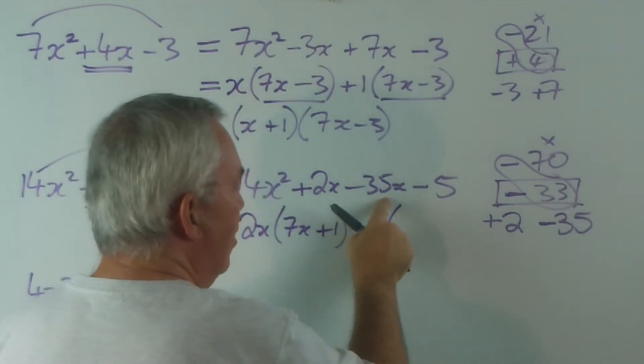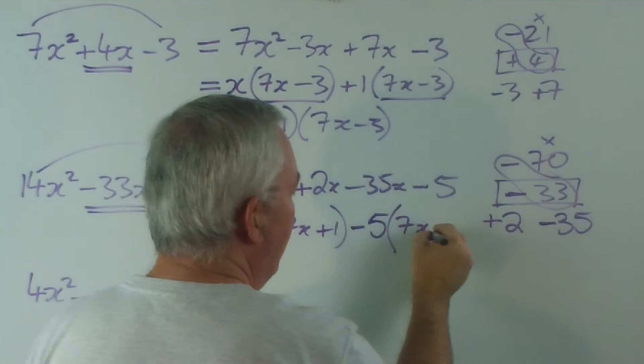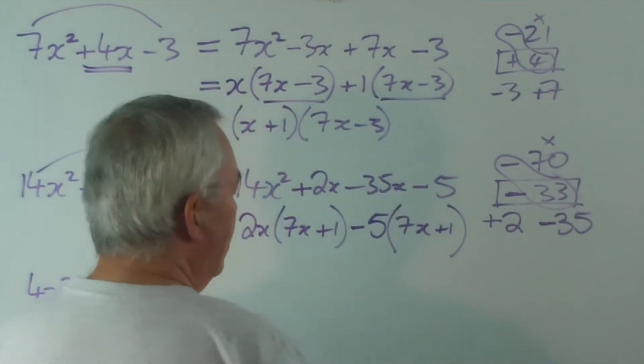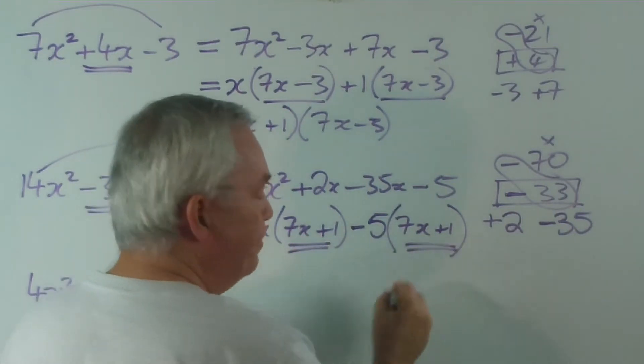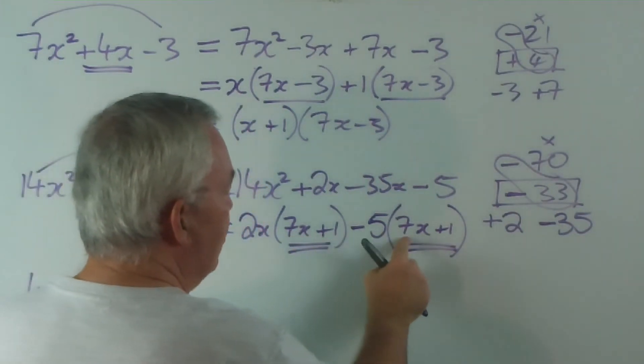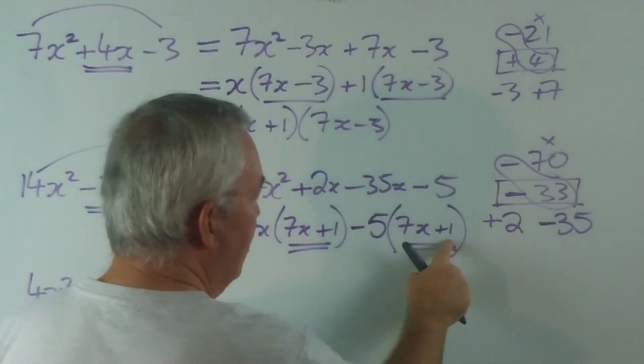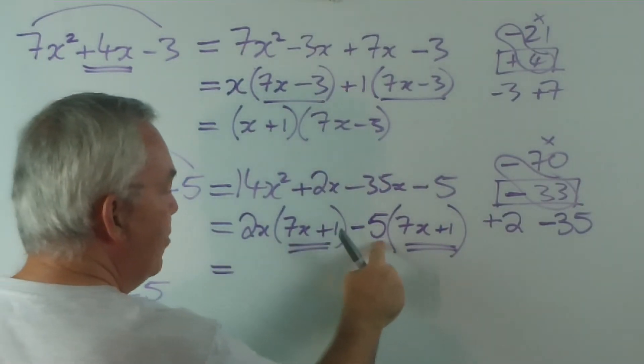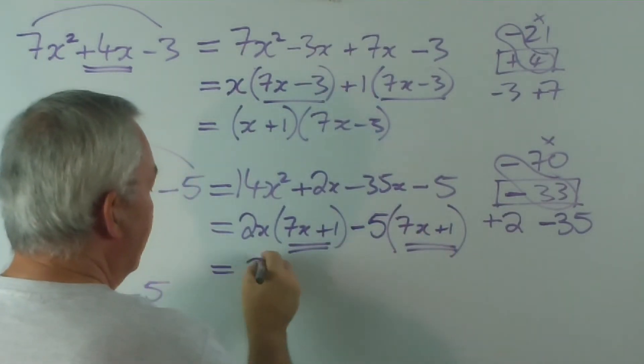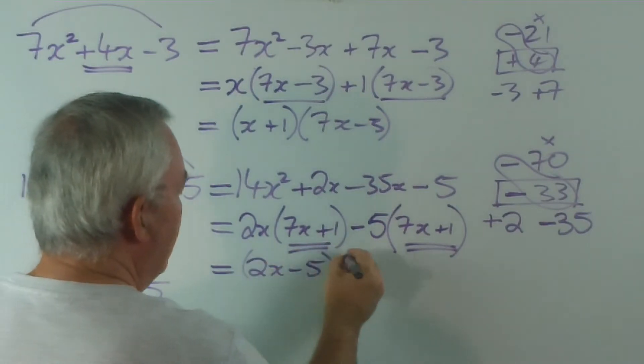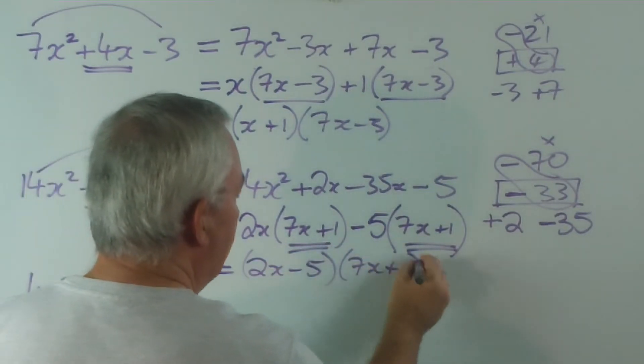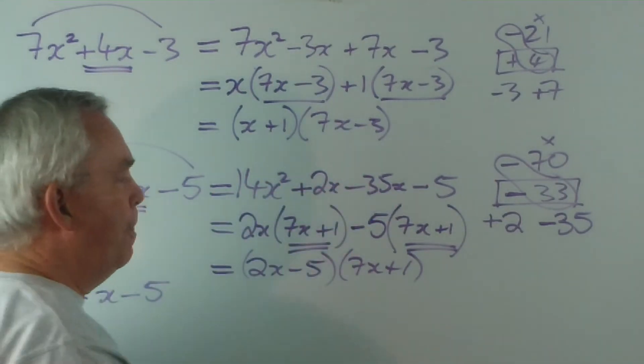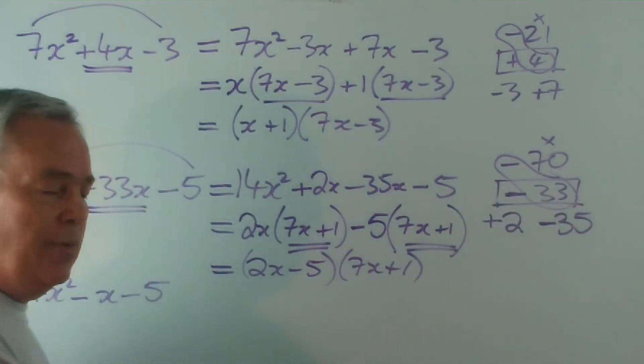If I take minus 5 out of this, I'm left with 7x. And if I take minus 5 out of this, I'm left with plus 1. Well, this is looking very good, isn't it? They're meant to be the same. Minus 5 times 7 is minus 35x. Minus 5. All works out. So I've got 2x lots of this, minus 5 lots of the same thing, so I've got 2x minus 5 lots of the 7x plus 1. So that was quite a difficult one, but you'd unraveled fairly quickly. You can see the beauty of knowing what to do over here.